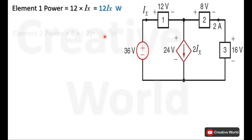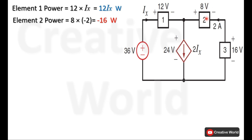Now move towards element 2. The voltage across element 2 is 8 volts and the current through it is 2 amperes. This current is taken with a negative sign because the current is entering from the negative terminal. The power of element 2 is −16 watts and this power is being supplied. In the case of element 1, the power is being absorbed because of the positive sign.